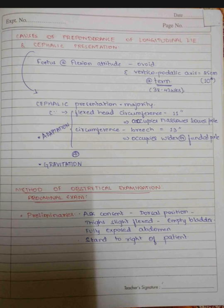The causes of preponderance of longitudinal lie and cephalic presentation include: the fetus is usually in a flexion attitude, giving it an ovoid shape easier to pass through the maternal pelvis. The verticopodalic diameter (vertex to legs) is 25 cm or 10 inches, while the bisacromial diameter (between the two acromial processes) is 12 cm or 5 inches, the bitrochanteric diameter is 10 cm or 4 inches, and the biparietal diameter is 9.5 cm or 3.75 inches.